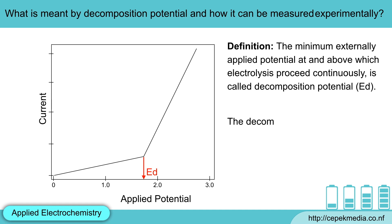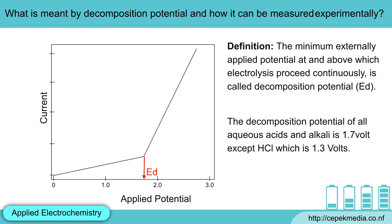The decomposition potential of all aqueous acids and alkali is 1.7V, except hydrochloric acid which is 1.3V.